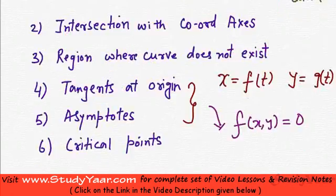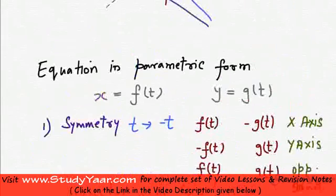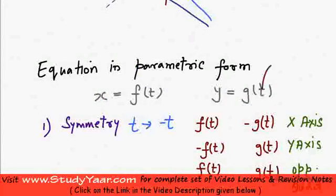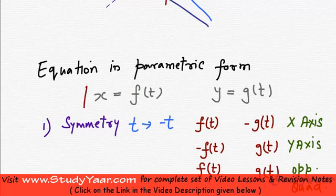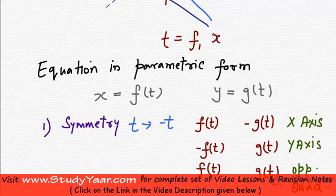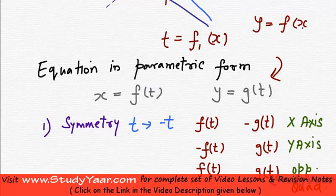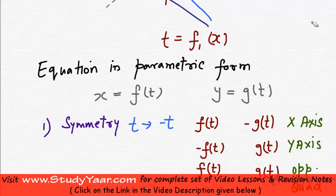So, what you could do is you could look at this equation, get t in terms of x. From this you could get t in terms of x and then you can replace it over here. So, you would get y as a function of x. One way to do is this, but this is a complicated way. Eliminating t is not that easy.